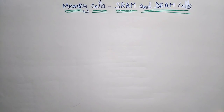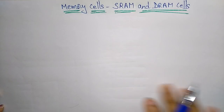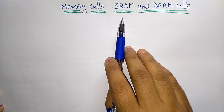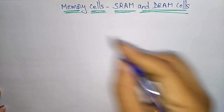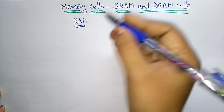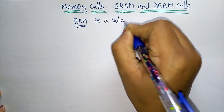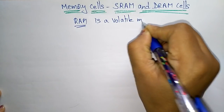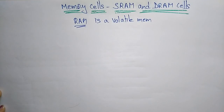Let us discuss the next topic: memory cells — SRAM and DRAM. SRAM stands for Static RAM and DRAM stands for Dynamic RAM. RAM is a volatile memory, meaning it does not retain data when electric power is turned off.